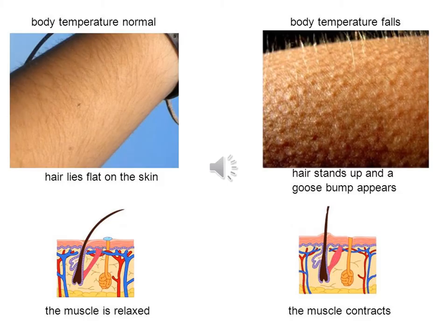This picture shows what happens to our skin when body temperature is normal or when body temperature falls. When body temperature is normal, hair lies flat on the skin and the hair erector muscle is relaxed. When body temperature falls, hair stands up and goosebumps appear — the hair erector muscle contracts to straighten the hair.